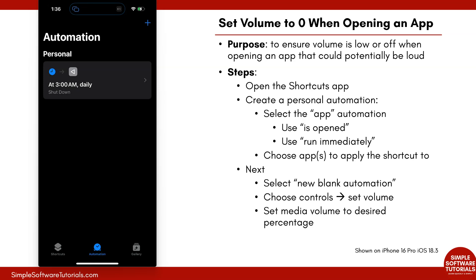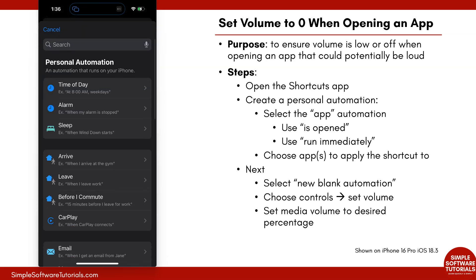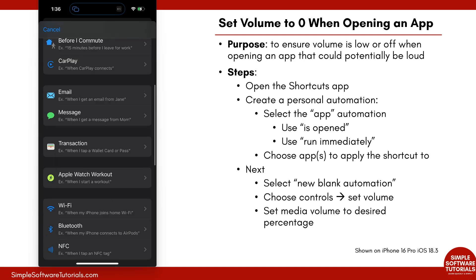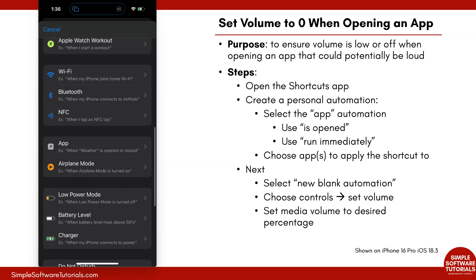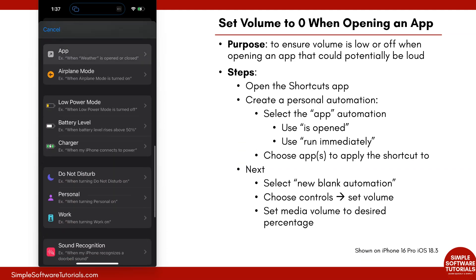This is something that will just occur when we tell it to. What we want to do is tap on the plus sign on the top right to create a new personal automation, and from here you can either search in the search bar for apps or just scroll down until you find App. This is what we are looking for right here where it says App.